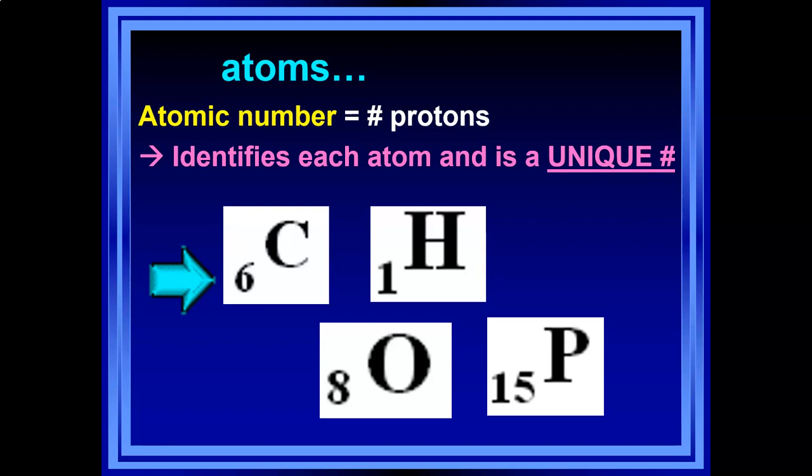Hydrogen has one proton — its atomic number is one. Could hydrogen ever have two protons? The answer is no, because then it wouldn't be hydrogen, it would be helium. Atomic number is unique to each element. If the element is neutral — meaning no overall charge — it will have the same number of electrons as protons.